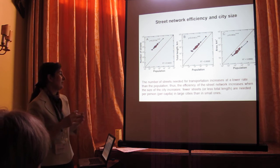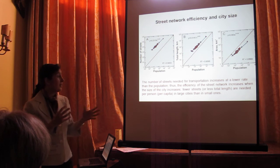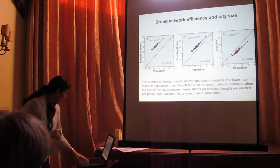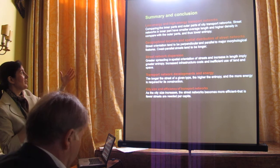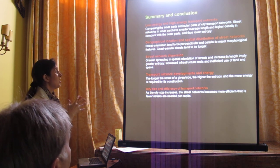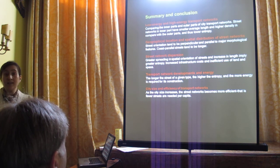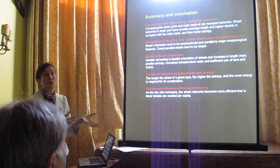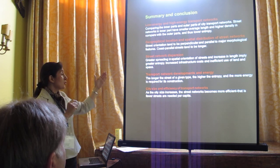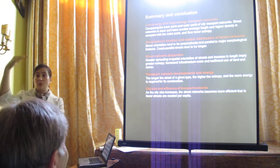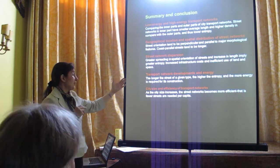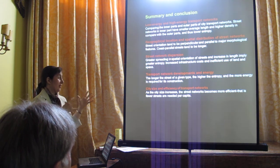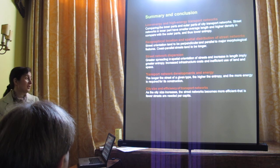In other words, fewer streets, less total length, and less area are needed per capita in large cities than small ones. To summarize: we can identify low energy and high energy transport networks by comparing the inner and outer parts; geographical location and landscape constraints have a large effect on spatial distribution; street network dispersion increases as a function of distance from center and also as a function of time; and there is a relationship between city size and the efficiency of transport networks.